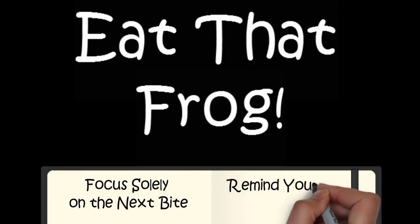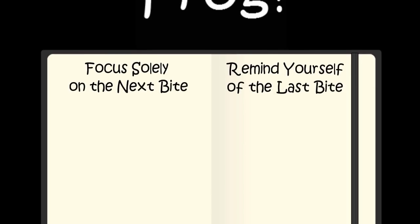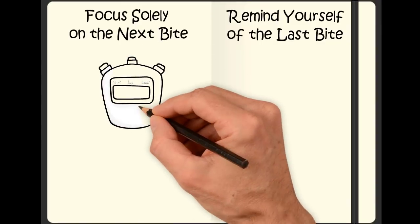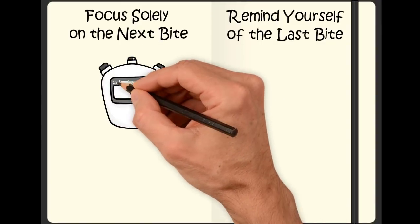The best way to eat a big, ugly frog is to focus solely on the next bite and remind yourself of the last bite. I do this by focusing solely on a small section of a task that I can complete in the next 10 minutes.